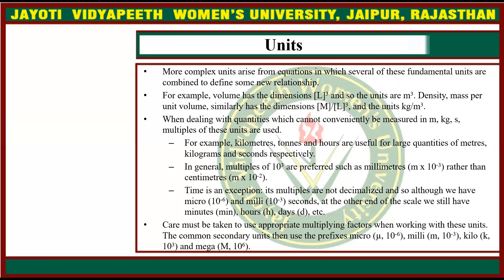When dealing with quantities which cannot conveniently be measured in meters, kilograms, or seconds, multiples of these units are used. For example, kilometers, tons, and hours are useful for large quantities of meters, kilograms, and seconds respectively. In general, multiples of 10 to the power 3 are preferred — for example, millimeters is written as meter times 10 to the power minus 3 rather than centimeters, which is meter times 10 to the power minus 2.